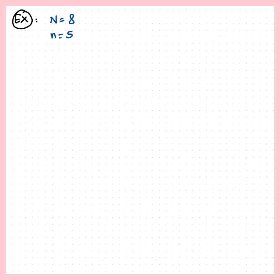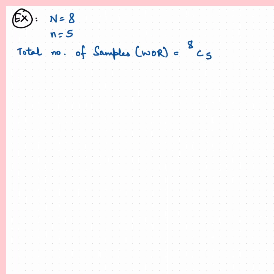Covering a quick example: suppose we have a population size of 8 and a sample size of 5, then the total number of possible samples is 8 choose 5. The two most popular methods of selecting a sample are the lottery system and random number tables.